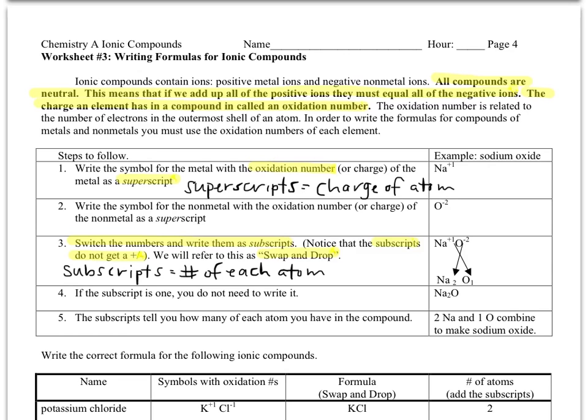The really important thing to remember here, because this is a little bit more challenging than worksheet 2, is all compounds are neutral. What does that mean? That means if you add up all the positive charges coming from the metal, the first thing in the compound, and all the negative charges coming from the non-metal, the second thing in the compound, they have to add up to zero. Remember, those charges, the plus and minus numbers, are actually called oxidation numbers. So if I say oxidation number, I just mean the charge, the plus or minus number.